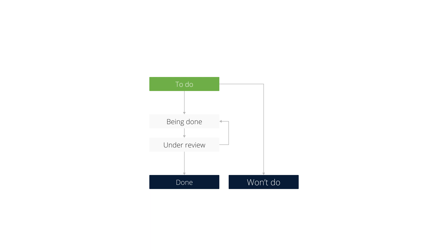Before we proceed, it's important that you understand the difference between states and activities. Activities in Workflow Engine are essentially the steps of your workflow, whereas states are major stages of your business process. One state might have many activities that belong to it.